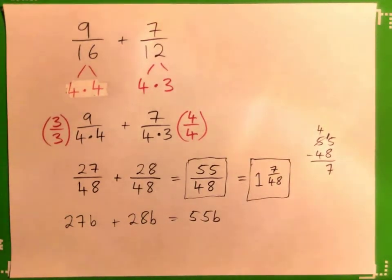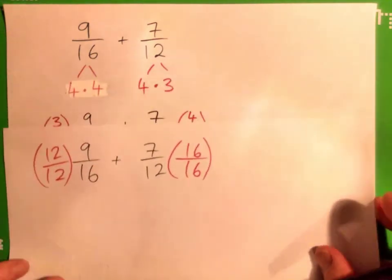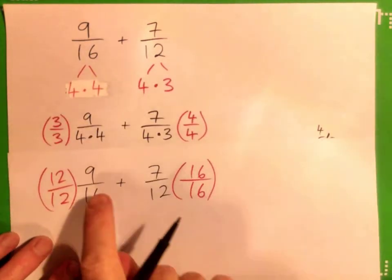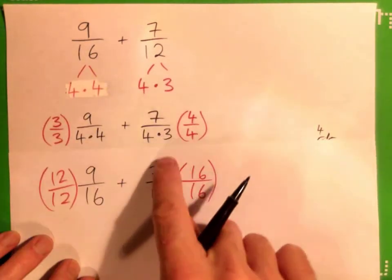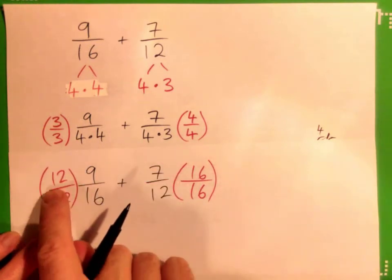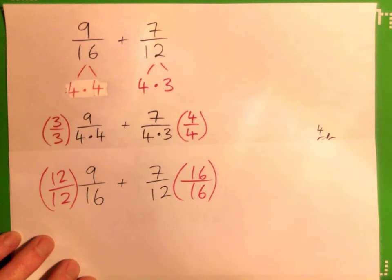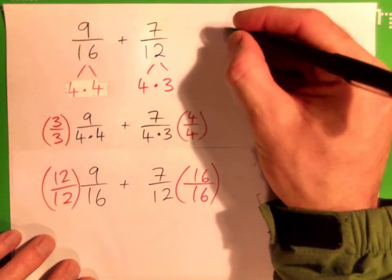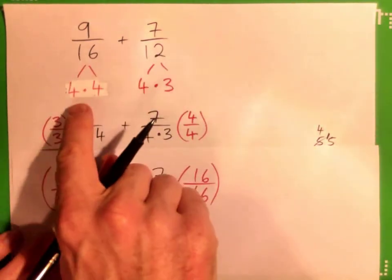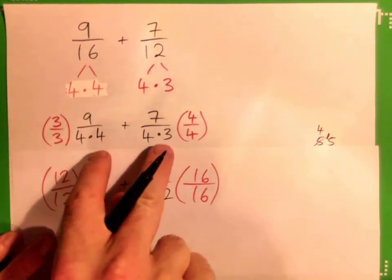And that's a lot less work than doing it this way. See, remember we figured out, yeah, let's multiply by 3 over 3 and 4 over 4. Which is way better than 12 over 12 and 16 over 16, isn't it? So again, we found the common factor. We find the common multiple, and we factorized the bottoms.